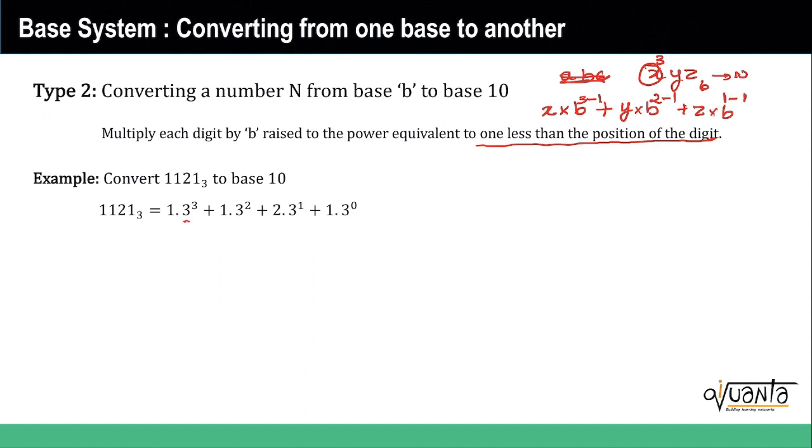So we have taken the number, we have multiplied it with base 3 raised to the power 3 because position is fourth, so on and so forth. We keep doing this and we get this expansion. You calculate it further, 3 to the power 3 becomes 27 plus 1 into 3 to the power 2.